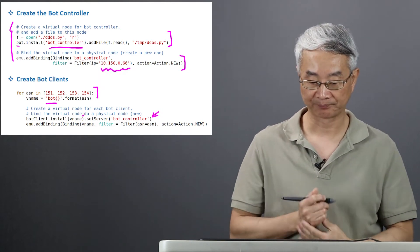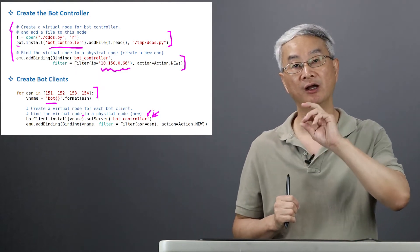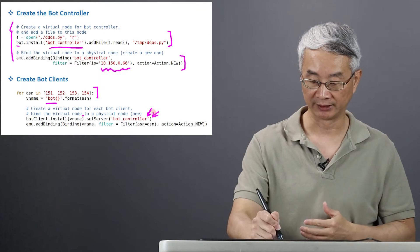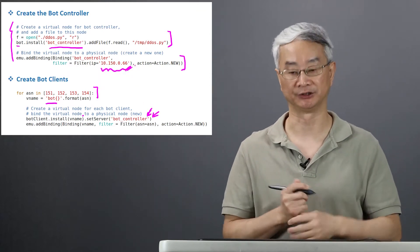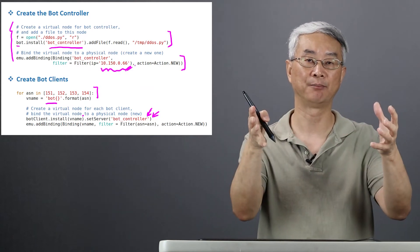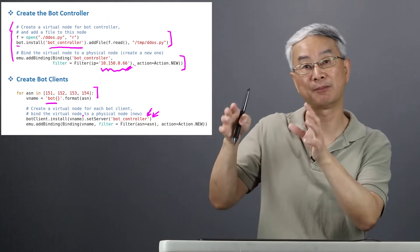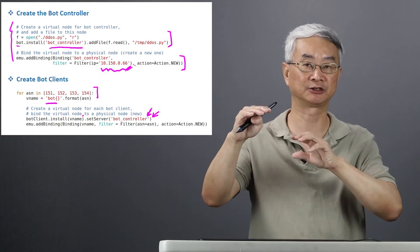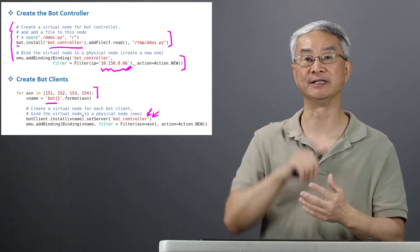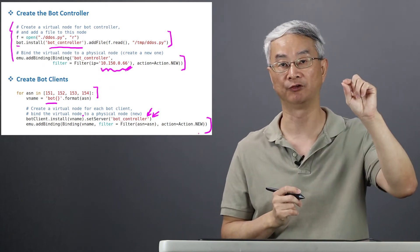I install the bot client, but I also need to let every bot node know their server — their controller. So I'm going to set the server using the virtual node name rather than the IP address. The reason we do that is because I want this botnet to be portable to different networks. In some other emulator, you may not even have that IP address. But if you set this using the virtual node, that should be okay — they're going to be replaced by the actual IP address eventually.